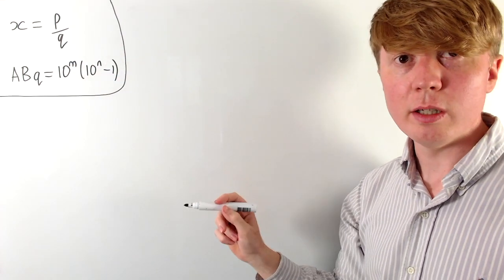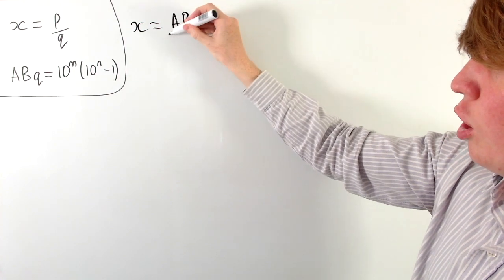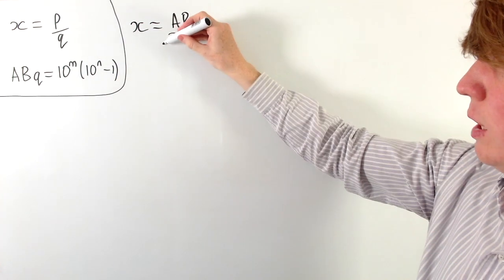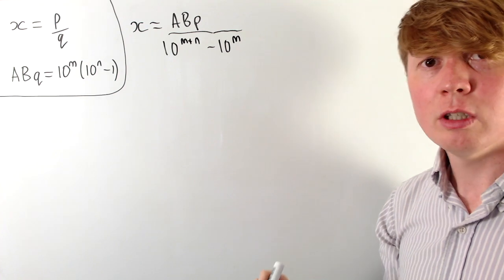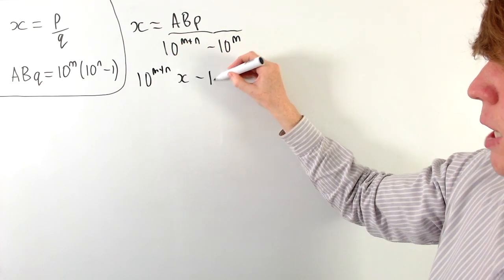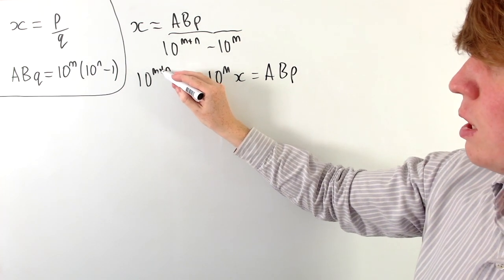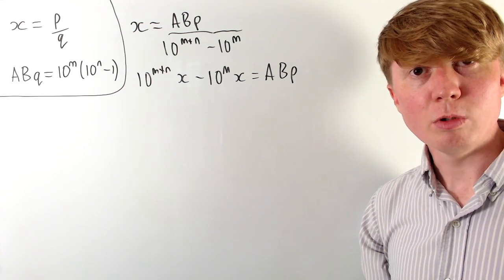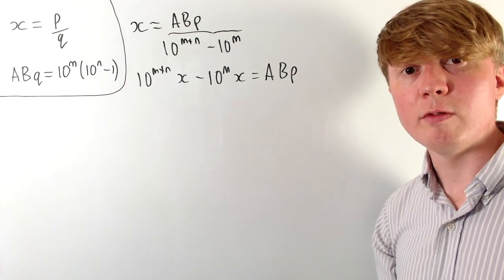Now let's see why having the denominator in this particular format ensures we have a recurring decimal. Our original rational number is p over q. Multiplying the numerator and denominator by A times B, we get ABp over ABq. We know that ABq is 10 to the m times 10 to the n minus 1. Expanding the bracket, we get 10 to the m+n minus 10 to the m as our denominator. Multiplying both sides by this denominator, we get 10 to the m+n times x minus 10 to the m times x equals A times B times p, which is an integer. This means when we do that subtraction, all of the decimal parts must cancel out.